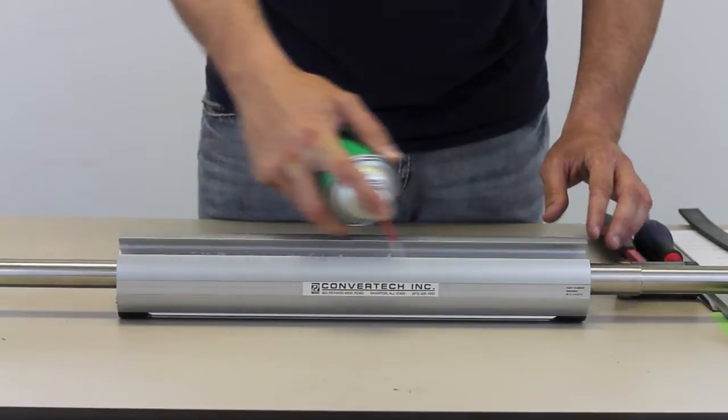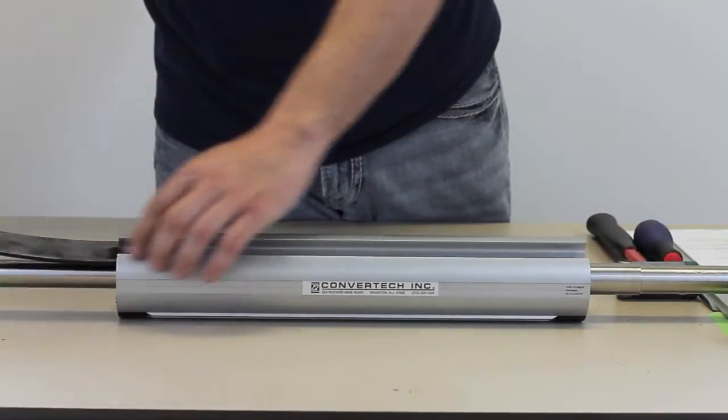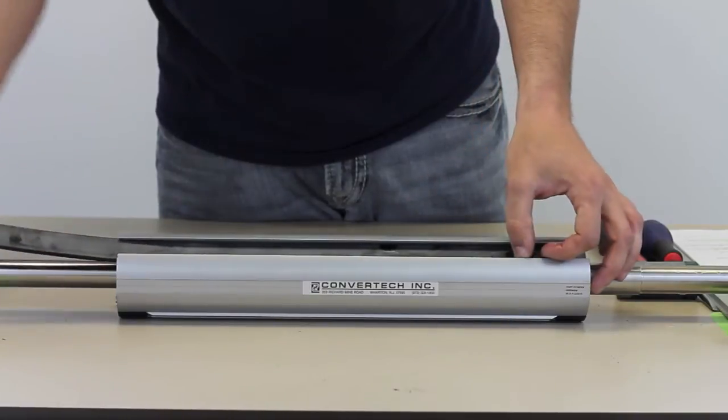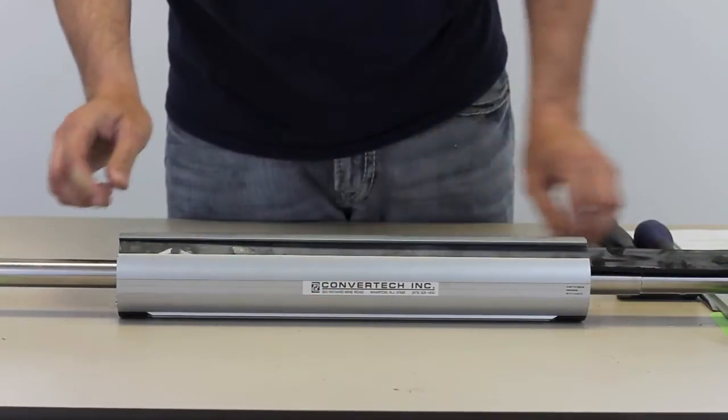To reassemble, insert the first plug in one end of the bladder and slide the bladder into the channel. Insert the first shim.